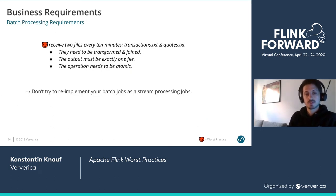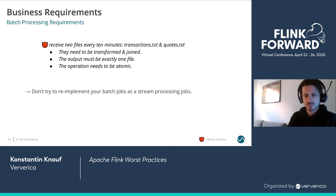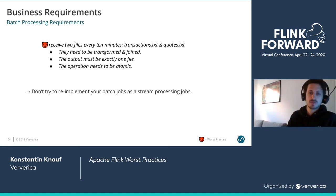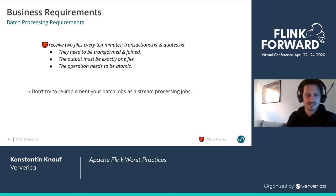The other scenario: a user receives two files every 10 minutes — transactions and quotes. The requirements are they need to be transformed, joined, there needs to be exactly one output file, and this whole thing needs to be atomic — either everything has been processed or nothing has. If these really are your business requirements, probably just write a batch job with Flink or any other system. It's not a good fit for a stream processing pipeline — it will just be artificially difficult. When making a change from a batch system to stream processing, take a step back, talk to the people who came up with the requirements, think about the actual business requirements, and model it as a continuous business process. Don't try to exactly re-implement your batch job as a stream processing job.